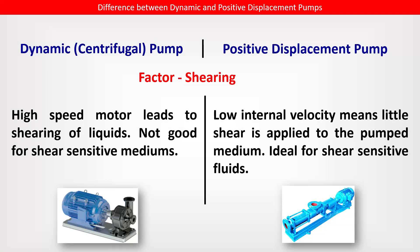Factor: shearing. In the dynamic centrifugal pump, the high-speed motor leads to shearing of liquids, which is not good for shear-sensitive mediums. In the positive displacement pump, low internal velocity means little shear is applied to the pumped medium, making it ideal for shear-sensitive fluids.